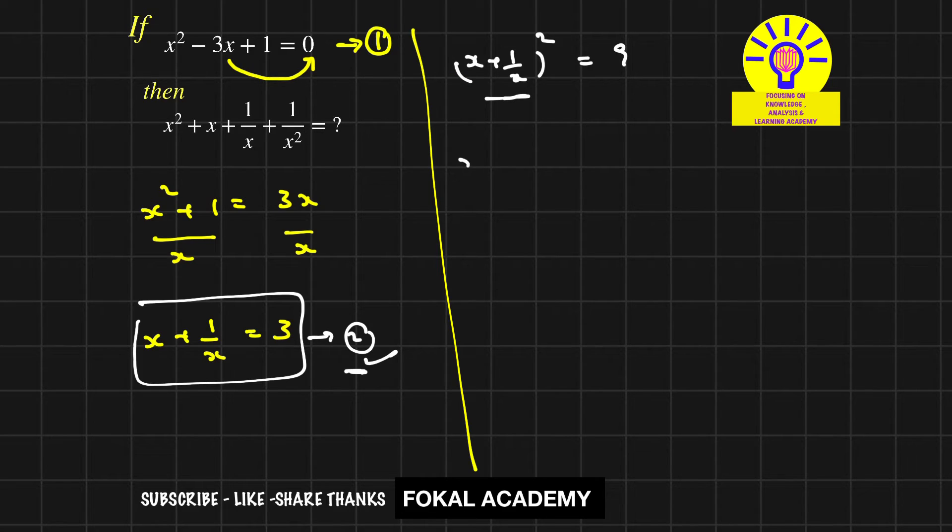That is x² + 1/x² + 2ab, that is 2 × x × 1/x, equals 9. Here x is cancelled, then it becomes x² + 1/x² = 9 - 2, that equals 7.